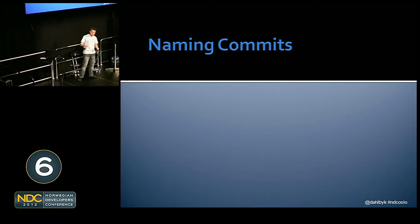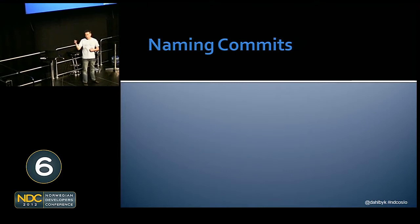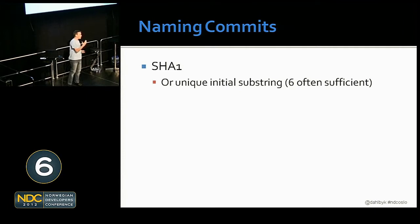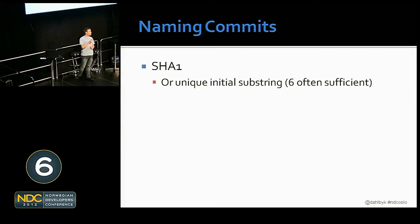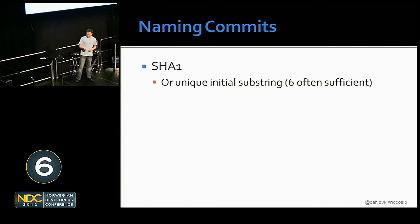So, naming commits. When working with git, lots of commands — rebases, cherry picks, and all that — take a reference to a commit. Getting good at naming commits without typing out that 40-character SHA is going to save you a lot of time. A commit's primary identifier is the 40-character SHA1 hash of the contents of the file when committed, who made the change, and so on. You can use the full SHA, but you can also use a unique substring — if you use the first six characters and git doesn't have two of those, that's good enough.